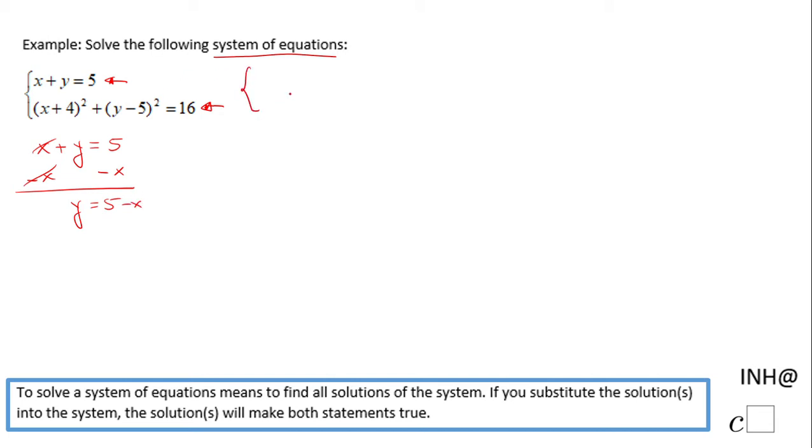So the equivalent system of equations of the original one will be y equals 5 minus x, and we're going to keep the second equation as it is. Now we can use substitution.